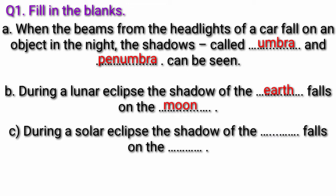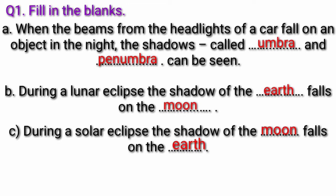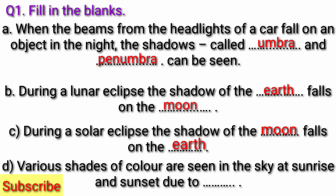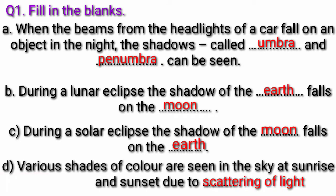Question C: During a solar eclipse, the shadow of the fill in the blank falls on the fill in the blank. Answer: During a solar eclipse, the shadow of the moon falls on the earth. Question D: Various shades of color are seen in the sky at sunrise and sunset due to fill in the blank. Answer: Various shades of color are seen in the sky at sunrise and sunset due to scattering of light.